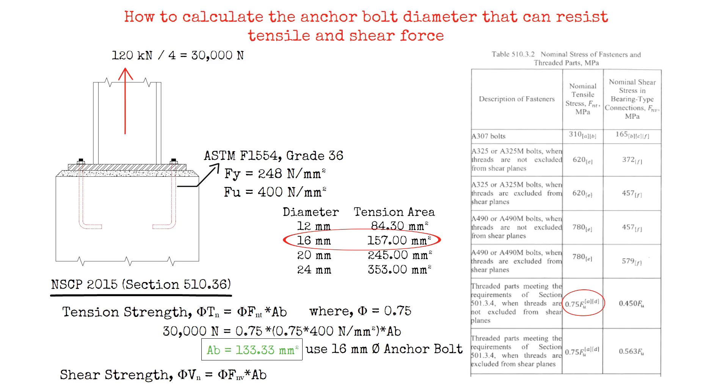The difference would be the nominal shear stress FNV, that is 0.45 of the ultimate strength FU, if the threaded parts meet the requirements of section 510.3.4 and threads are not excluded from the shear planes.